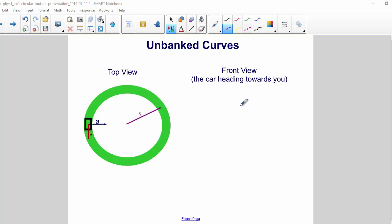So here is the top view of that car going around a circle, and here is a front view. So we know that we have mg down. The force of friction is what's holding it in a circle. And there's a normal force up.